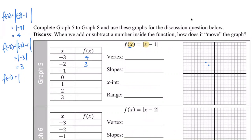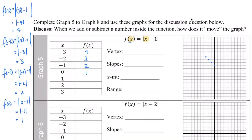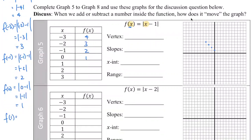F of negative one: negative one minus one is negative two, and the absolute value of negative two is two, so the point is negative one comma two. F of zero: zero minus one is negative one, absolute value is one, so zero comma one. F of one: one minus one is zero, absolute value of zero is zero, so the point is one comma zero.